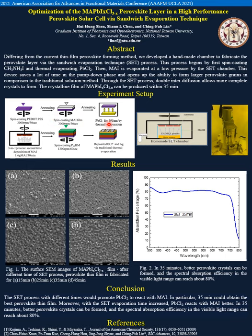After that, we use thermal evaporation to deposit lead chloride on MAI. Then, MAI is evaporated at low pressure by the SET chamber.